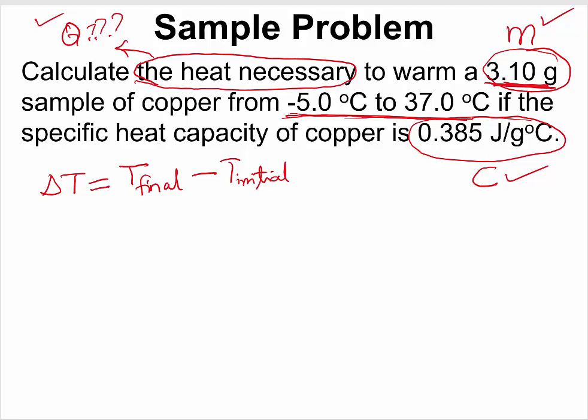So in the case of our question here, delta T will be equal to the final temperature, which is 37.0 degrees Celsius, minus the initial temperature, which is negative 5.0 degrees Celsius.